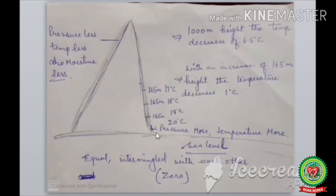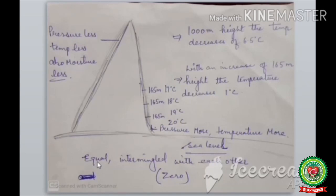Let's take altitude — height above sea level. Why do we measure height from sea level? Because sea level is equal everywhere — all seas and oceans are intermingled with each other. We don't take land because land is not equal everywhere; some places have high mountains, plateaus, or plains. Land is uneven, so we take sea level as zero because due to intermingling, the sea level is everywhere equal. We always measure height in sea levels.